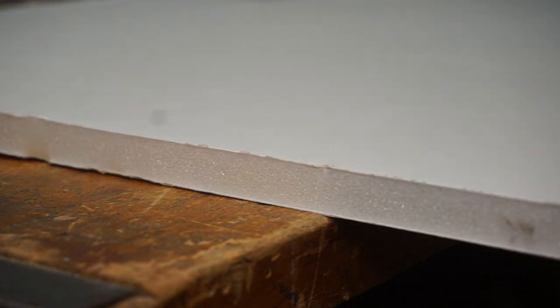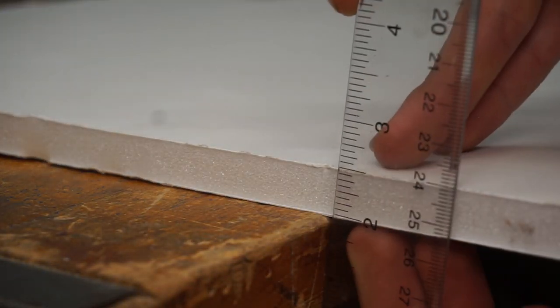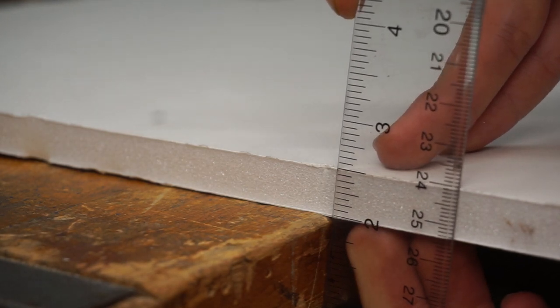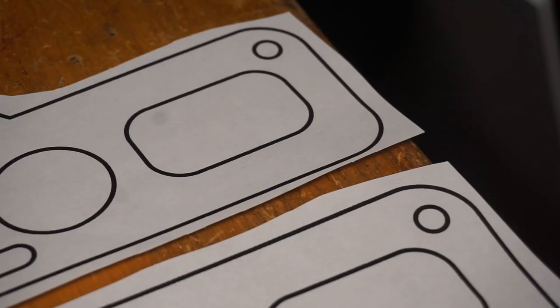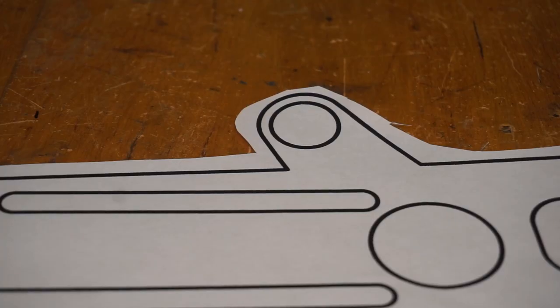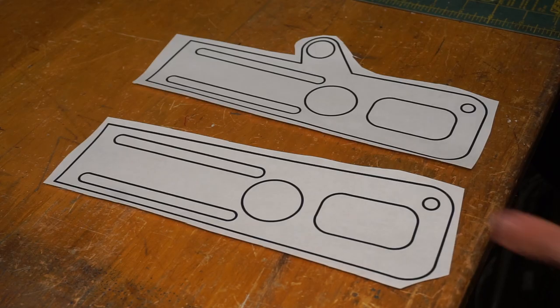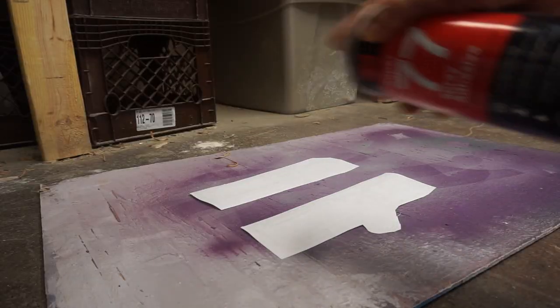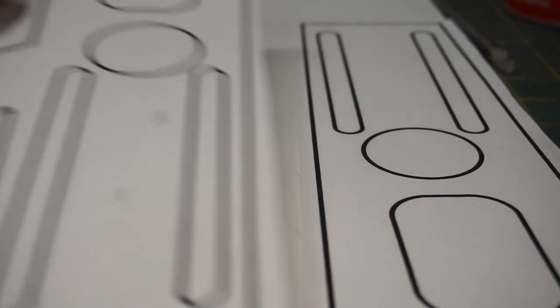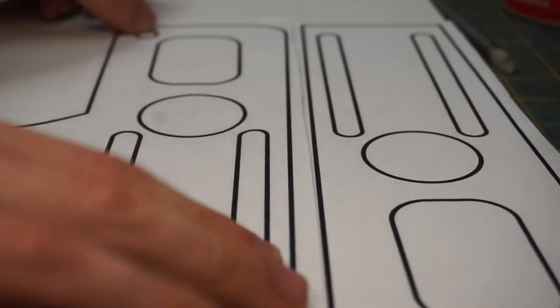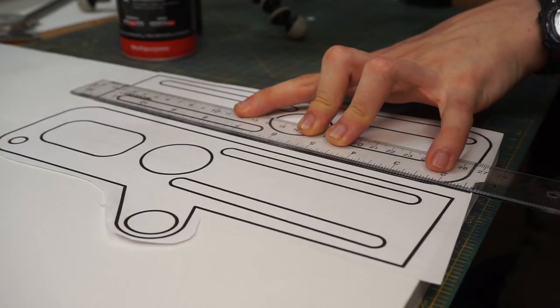A few special pieces need to be cut from thicker, half inch foam core material. These parts, the roller frames, are a great example of some of these. Just like the other templates, I'll apply glue, stick them on, and cut them out.